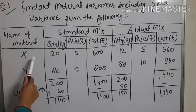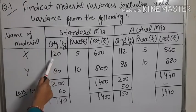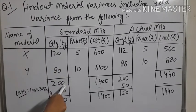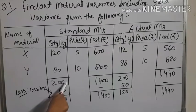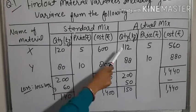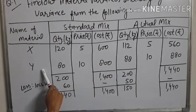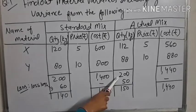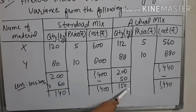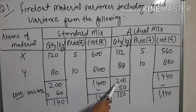Here are two materials: material X and material Y. Material X standard quantity is 120 and material Y standard quantity is 80. The total of standard mix is 200, and standard yield or output is 140. Actual quantity for material X is 112 and for material Y is 88. Total is again 200, loss is 50, and the remaining value — actual yield or output — is 150.